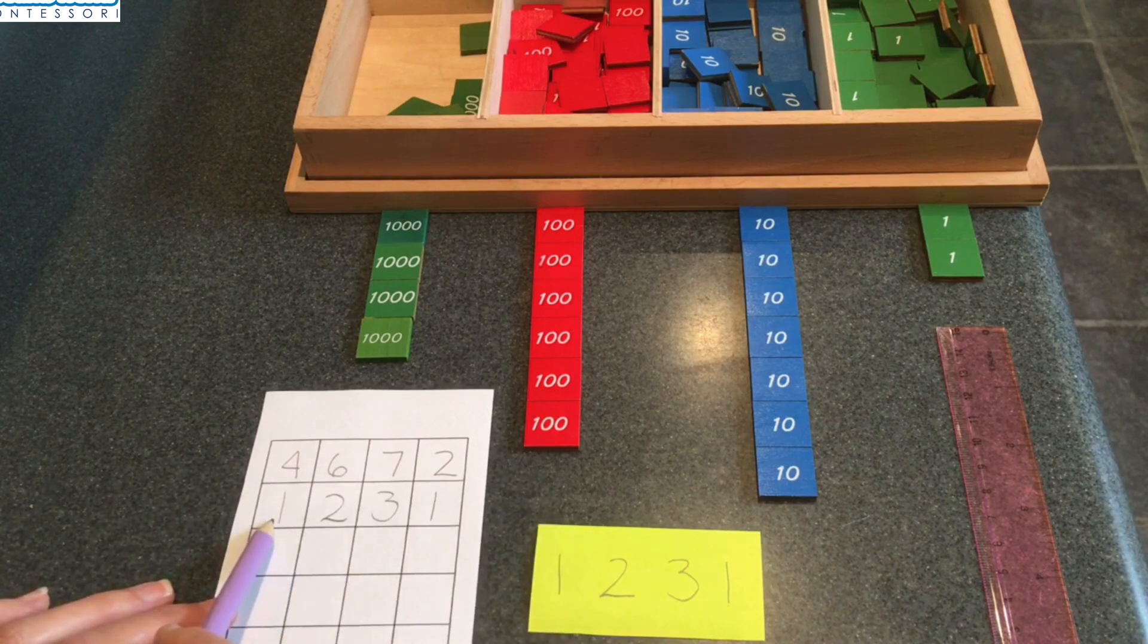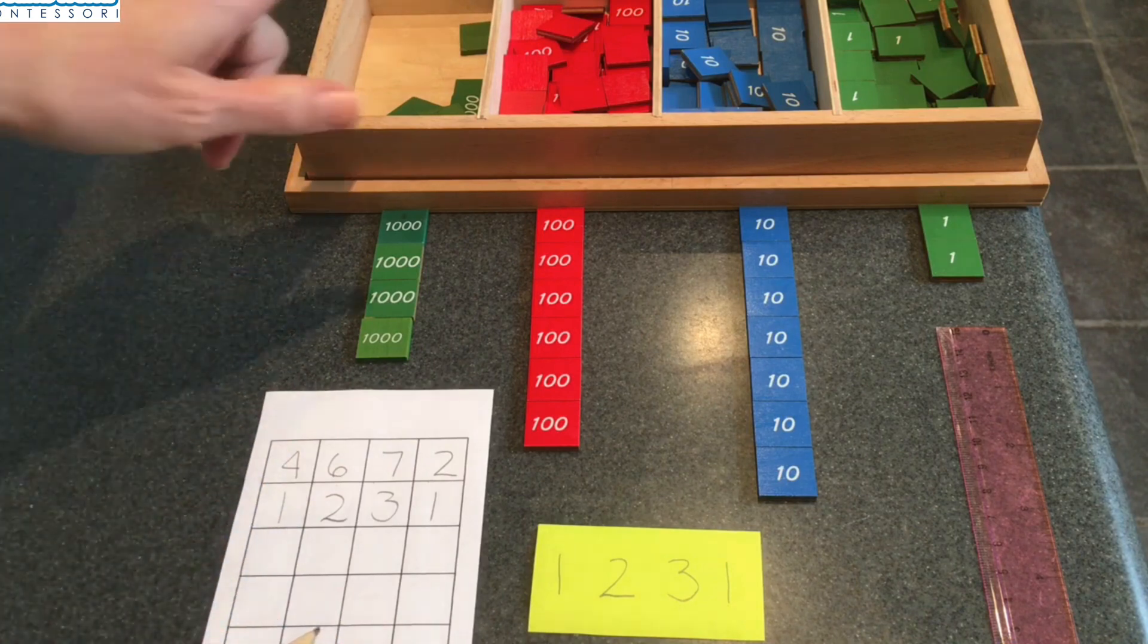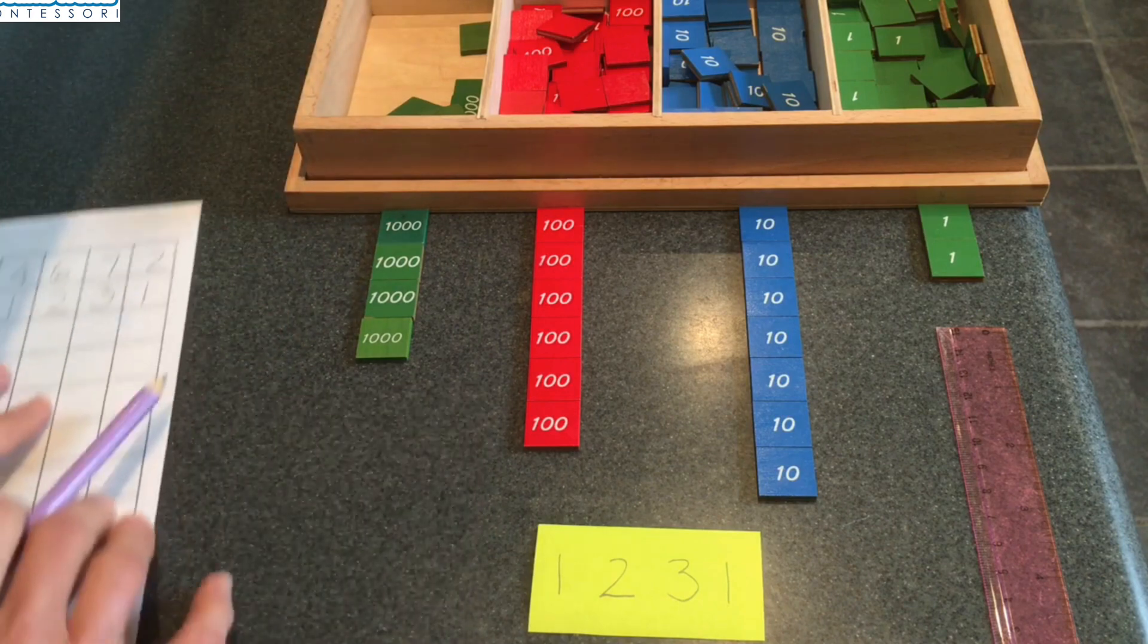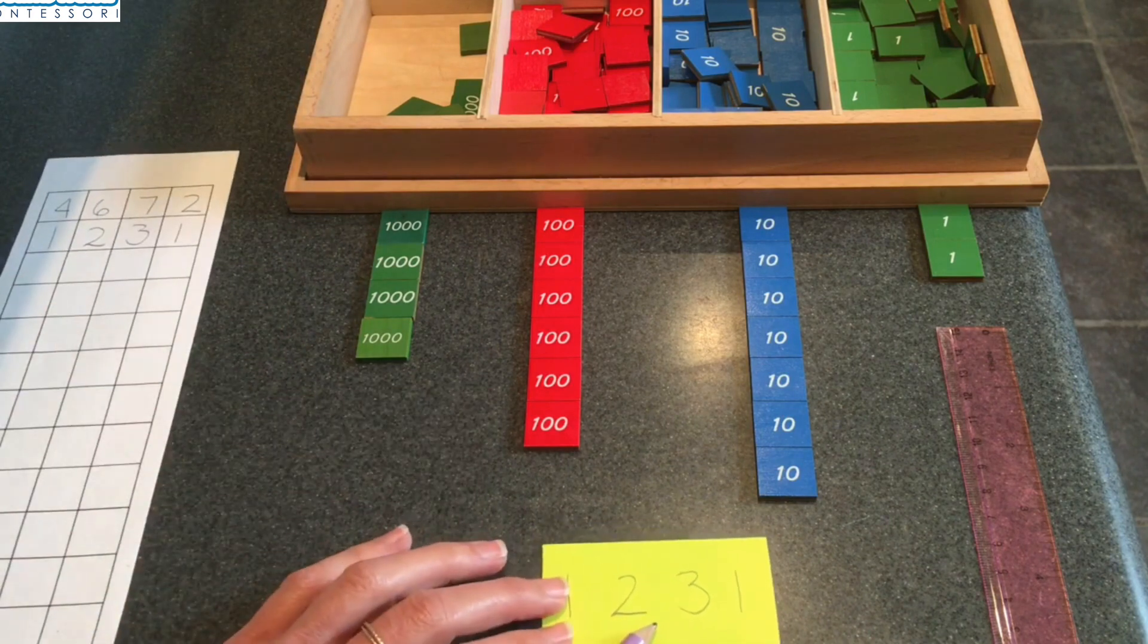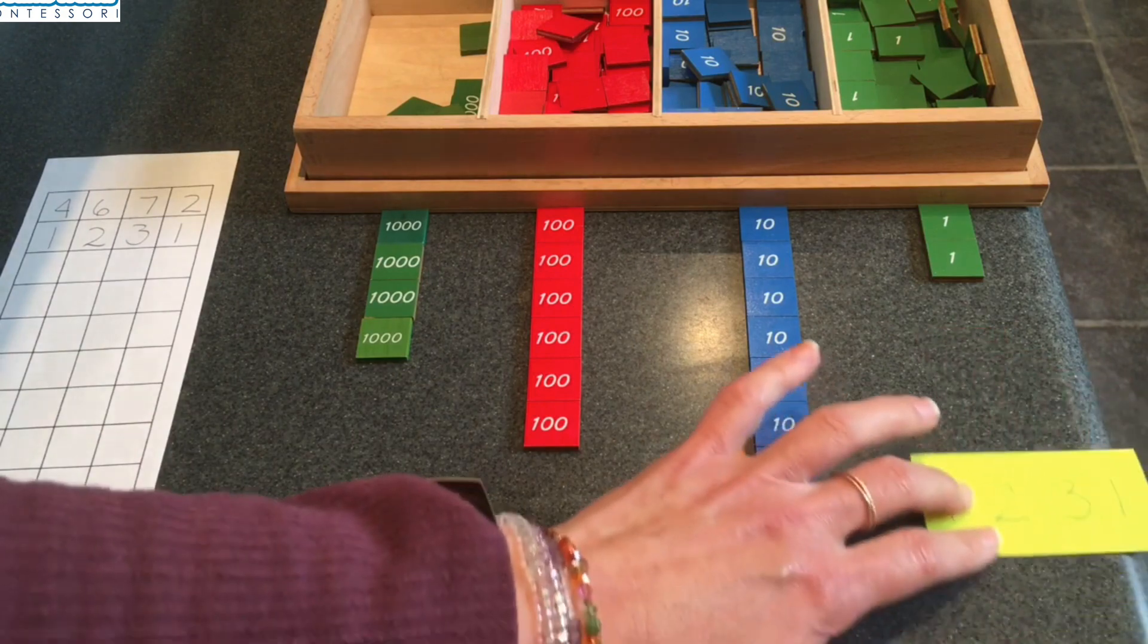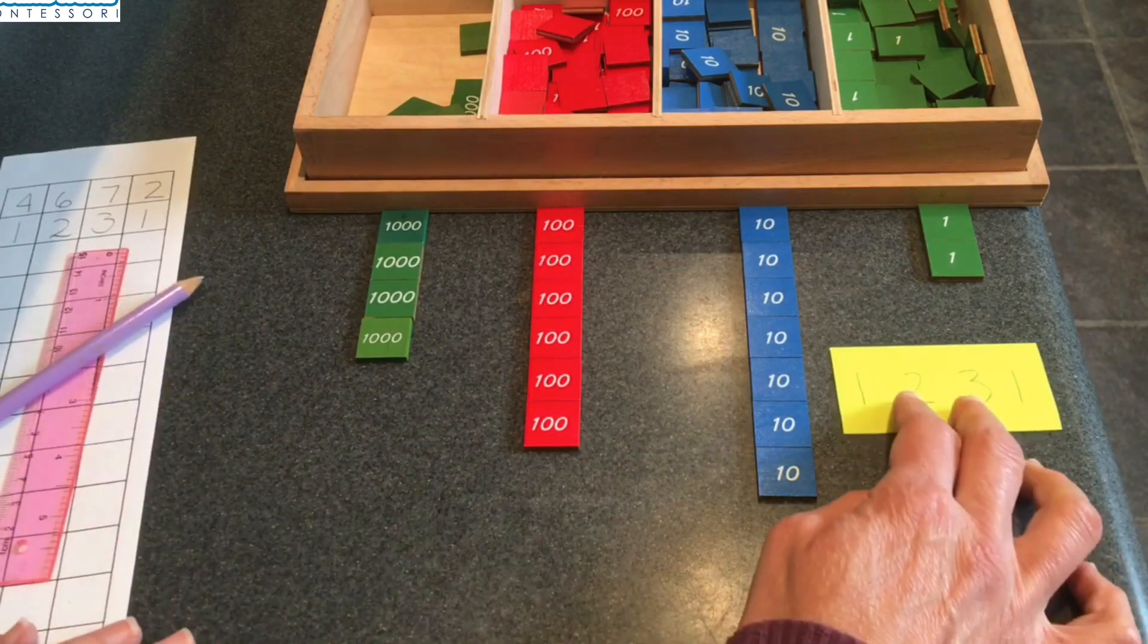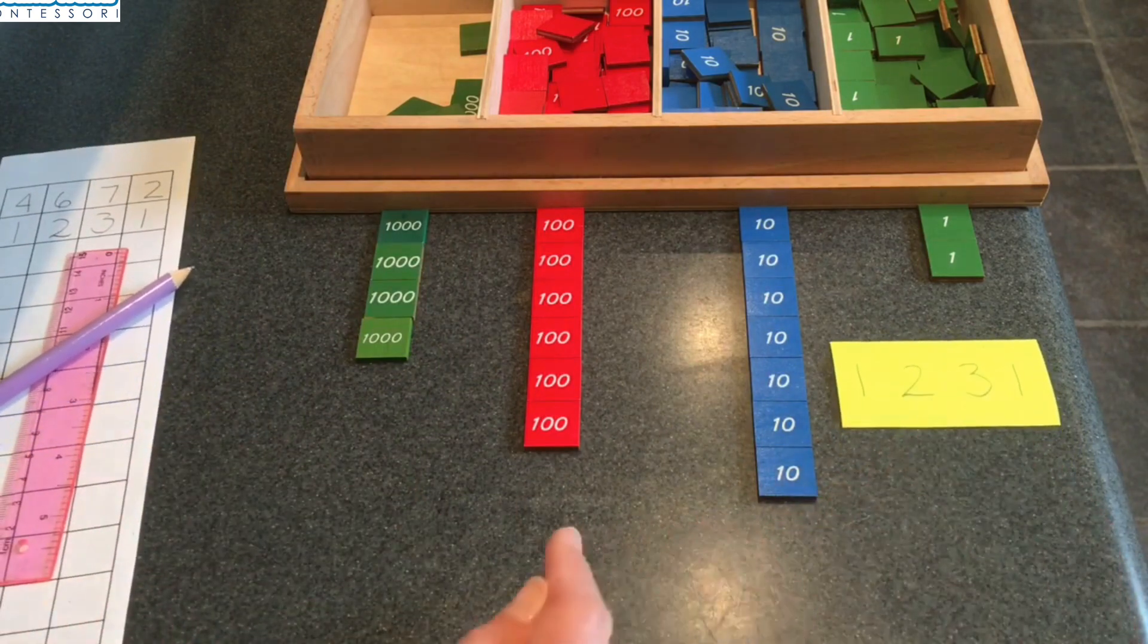I'm going to take this quantity away from the first quantity. So instead of taking stamps from the box, I'll take them from this quantity. I'll build my new quantity underneath these numbers. I'll move this over here so that I have space and you can see it.